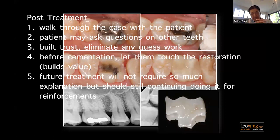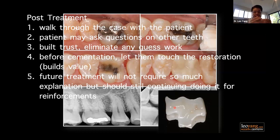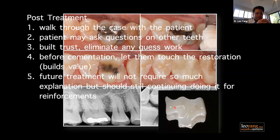Another thing I do is before cementation, when the restoration comes back — for example, this onlay or three-quarter crown — I actually put it in their hands and let them touch it and feel it. Most people will do that, some don't want to touch it — that's fine. But the key to letting them touch it is to build value and reinforce that this is what they're paying for. It's almost like touching a piece of jewelry — it reinforces why we did it and what was done for what they paid. In future treatments, you'll realize you won't spend so much time explaining, which opens up future complex work, aesthetic work, and quadrant work.